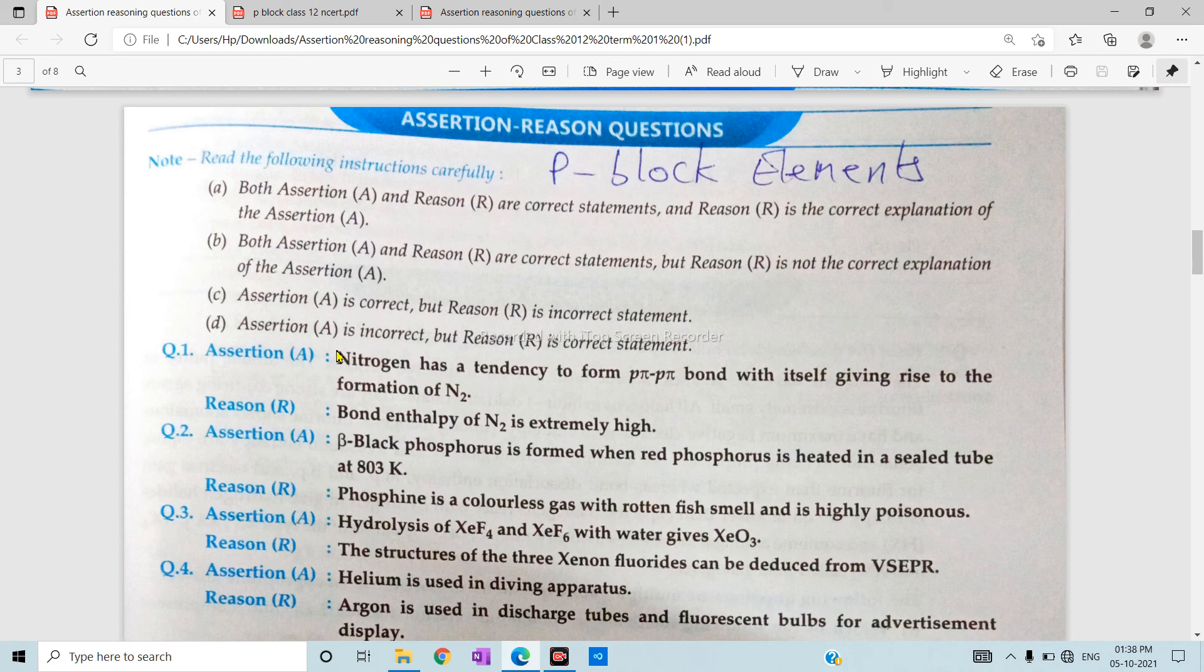So the first question is, nitrogen has a tendency to form P by P by bond with itself, giving rise to formation of N2. This statement is correct. And the other statement is correct, but there is no explanation here, so the answer is B.